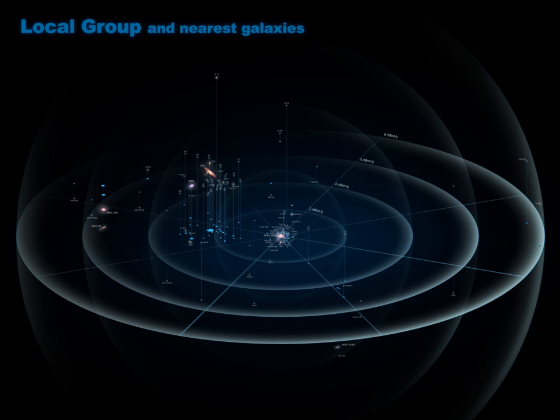The Sagittarius stream is a stream of stars in polar orbit around the Milky Way leached from the Sagittarius Dwarf.